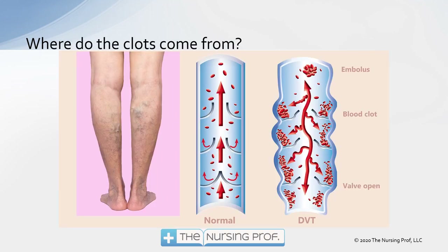So where do the clots come from? For the most part, the clots are coming from the calf — the lower leg — as a result of DVTs forming in those lower legs because of poor valves. We can have poor valve function that allows blood to slow down a little bit, coagulate, and form clots in the lower legs. Clots form down there because circulation is slower in the lower legs, further from the heart.